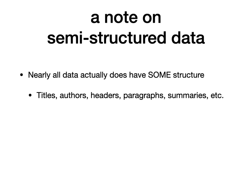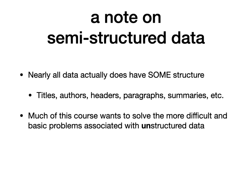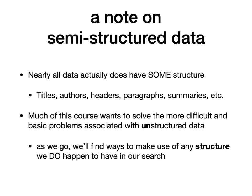A web page always has a title, always has an author — you can make use of that information. It has headers, paragraphs, summaries, and all these things. So a lot of the course will focus on trying to solve the more difficult and basic problems of unstructured data, but we'll also pick up ideas on how we can make use of actual structure that already exists in these things. Let's walk through a little example of how one might make use of information retrieval.